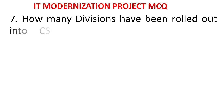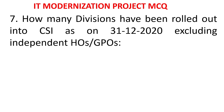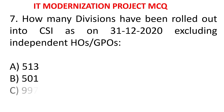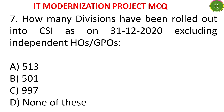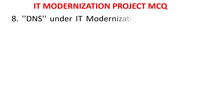MCQ 7: How many divisions have been rolled out into CSI as on 31-12-2020, excluding independent HOs and GPOs? Options: 513, 501, 997, or none of these. The answer is 501, excluding the HOs and GPOs.